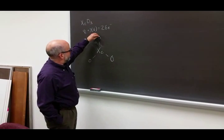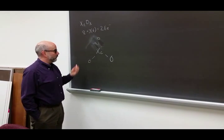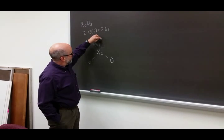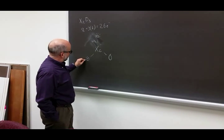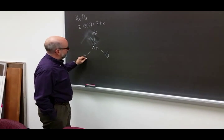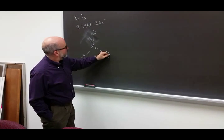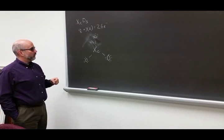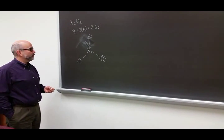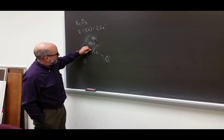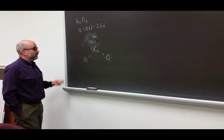Next step: put three unshared pairs of electrons around all the outer non-hydrogen atoms, which is all of the outer atoms here. Counting through the electrons placed on the oxygens, we use up electrons 6 through 24. We've placed three unshared pairs around all the outside oxygens. We have one more pair of electrons to distribute, and since that's the case, the next step says to put them on the central atom. This gives us our skeletal structure, but we are not done yet.